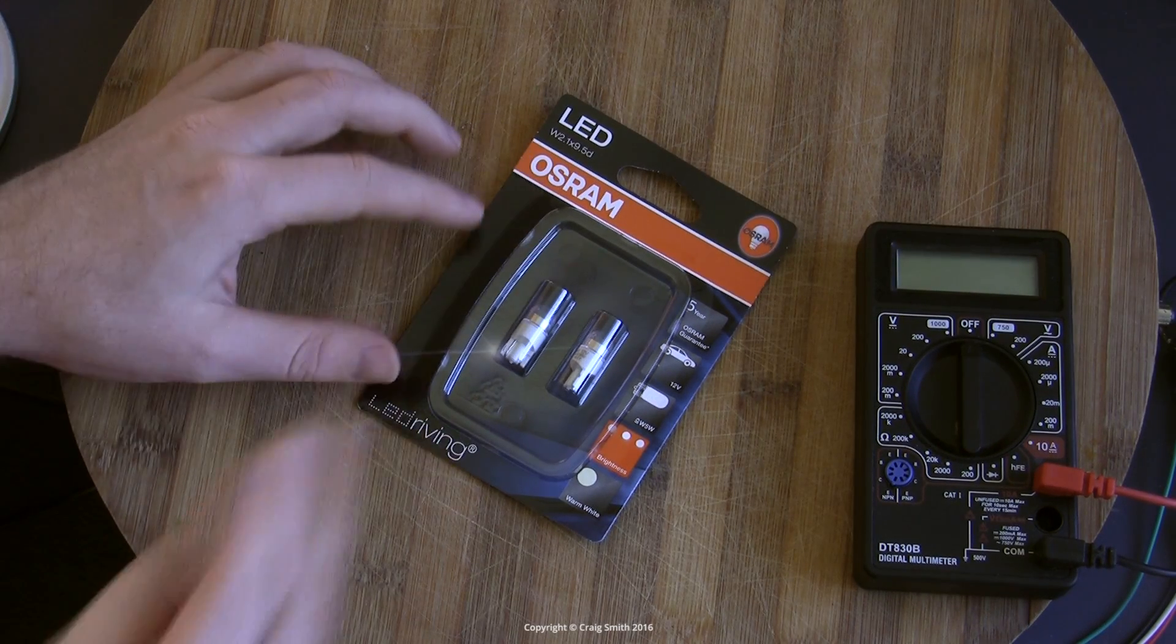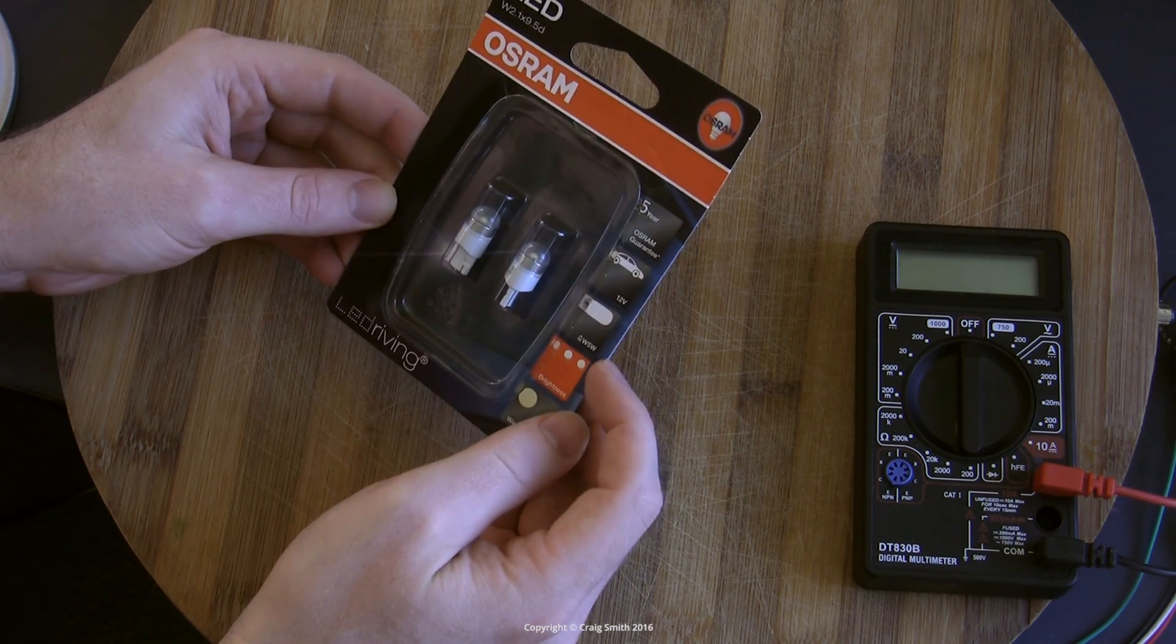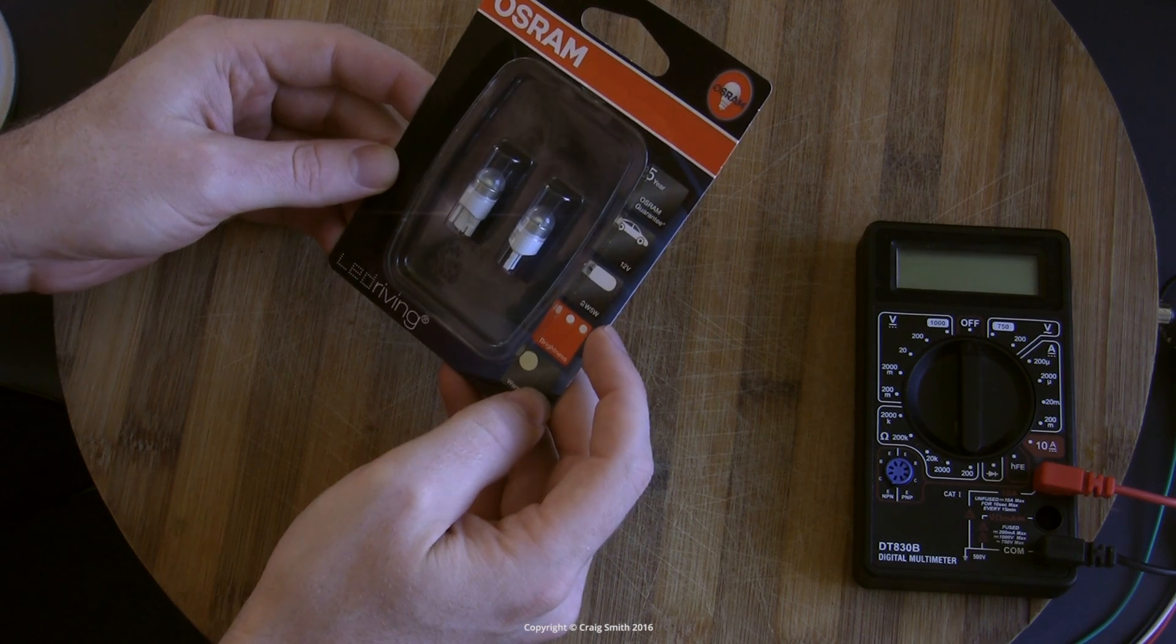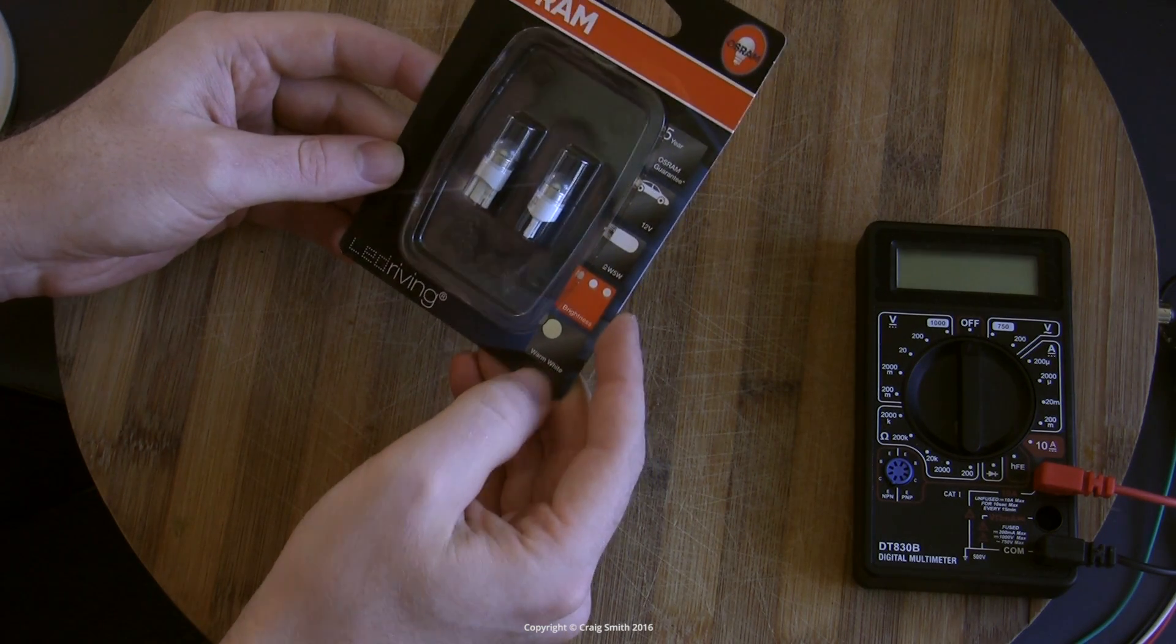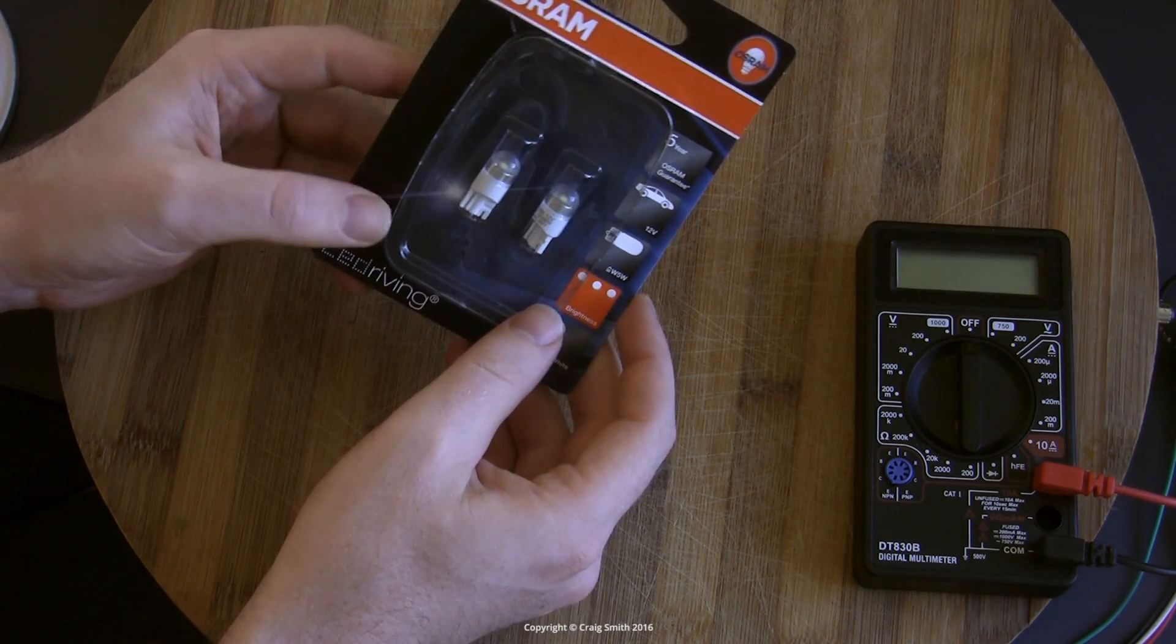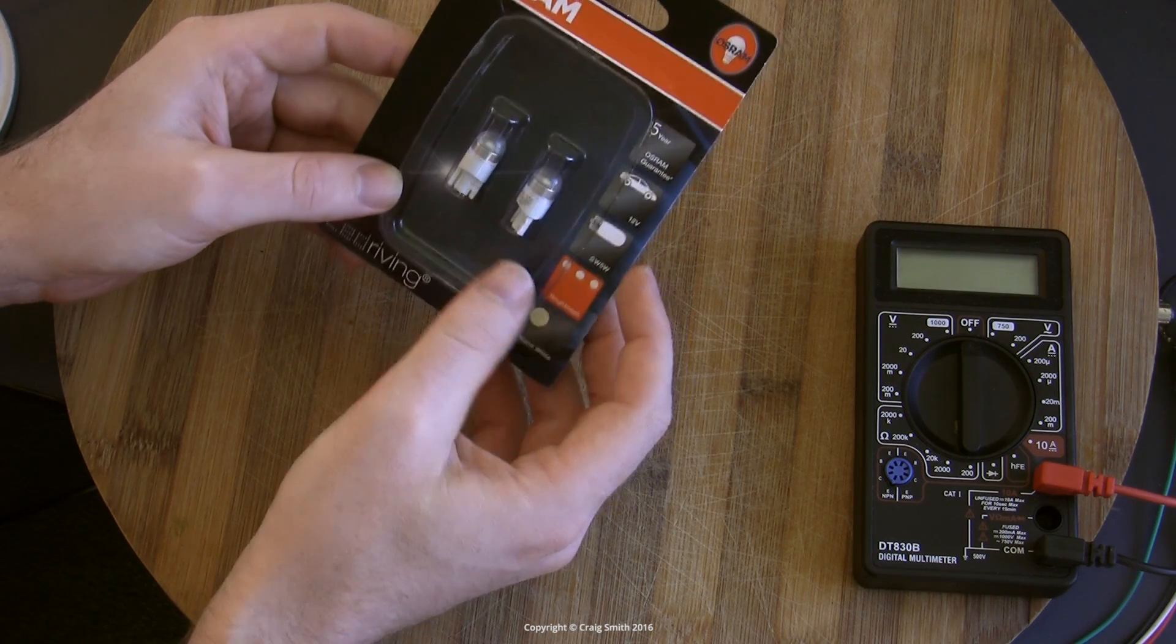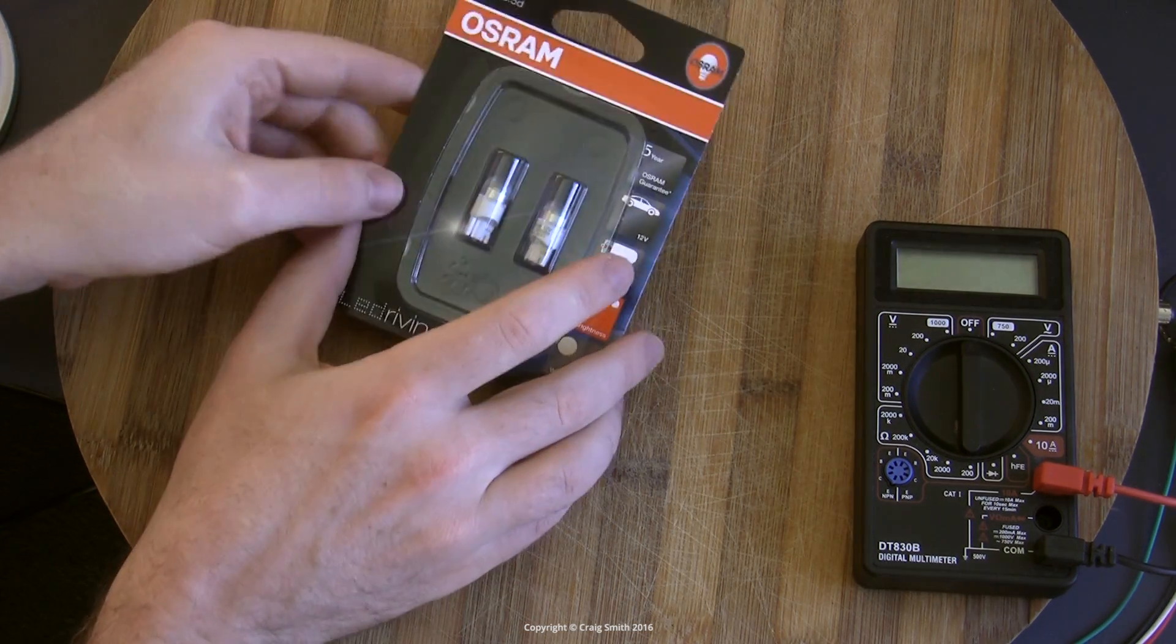Okay, what do we have here? These are Osram W5W, otherwise known as 501 wedge bulbs, two of them. These are white. Osram calls them warm white, although they are technically 4000 Kelvin, which I would call more of a neutral white, which is why I bought them, but more on that later.